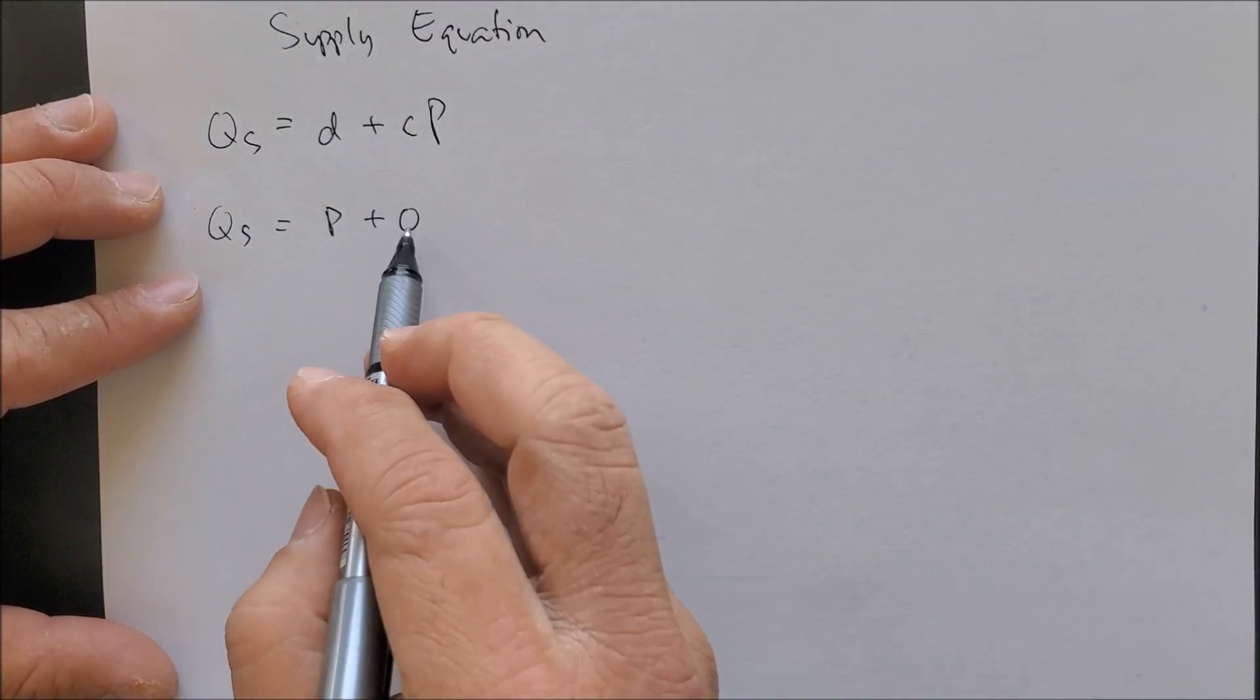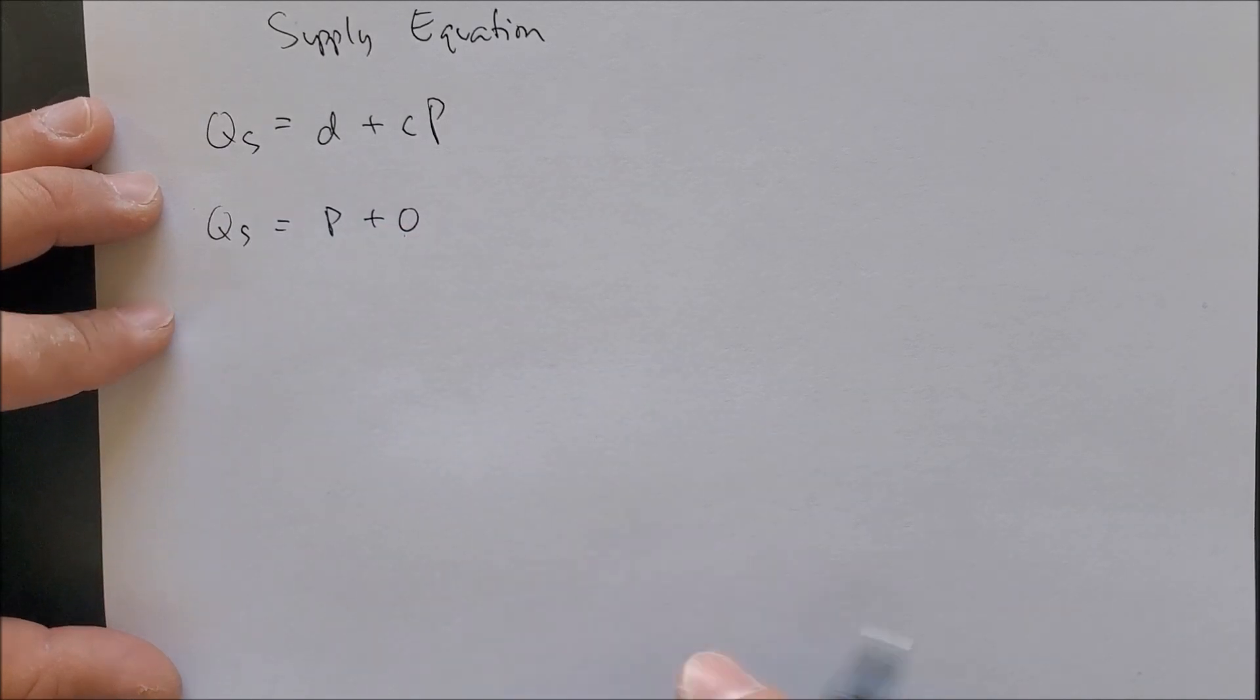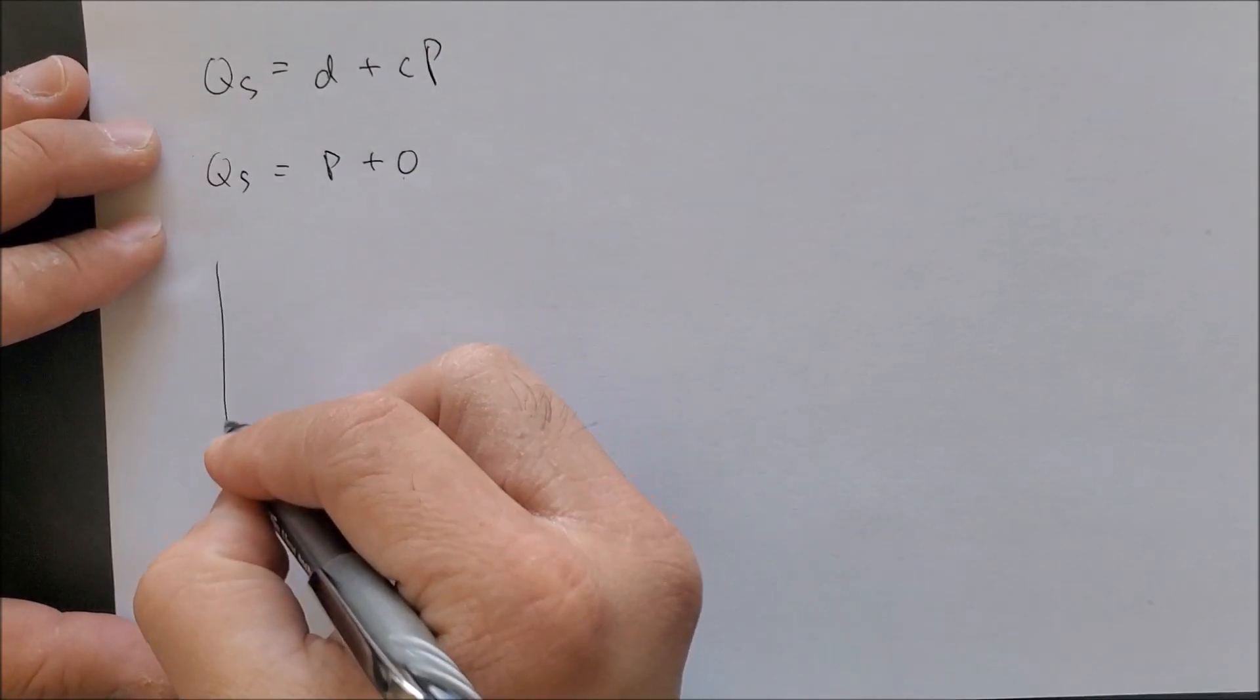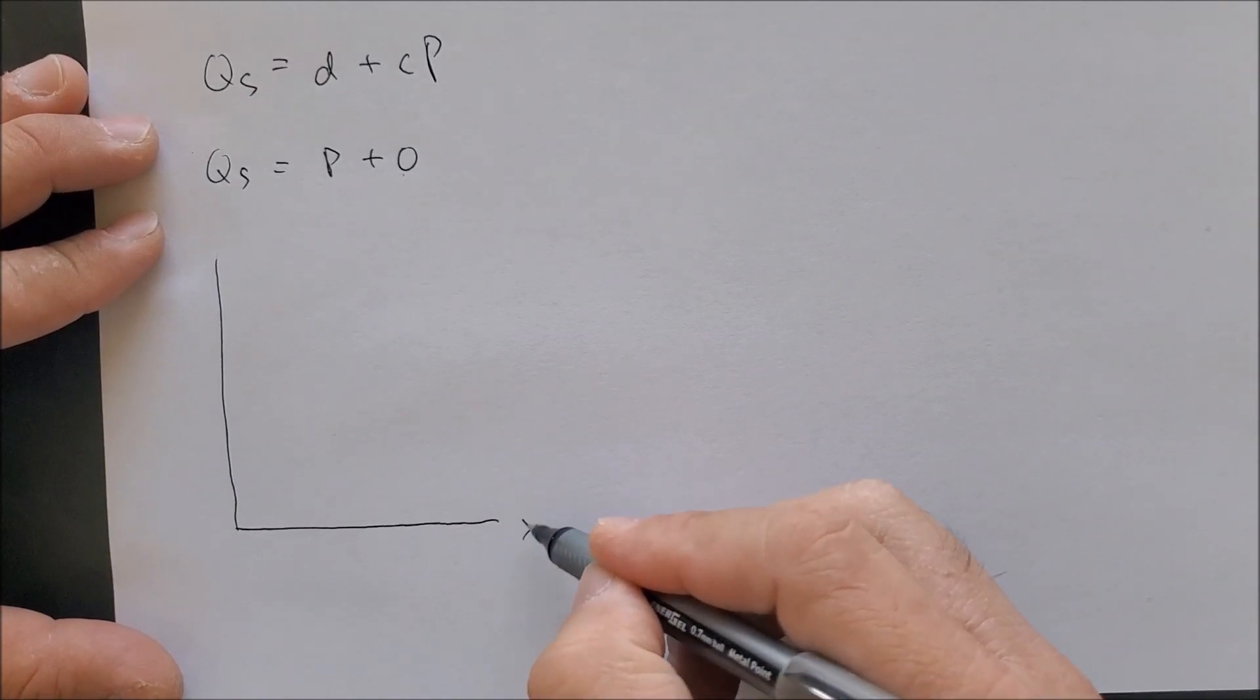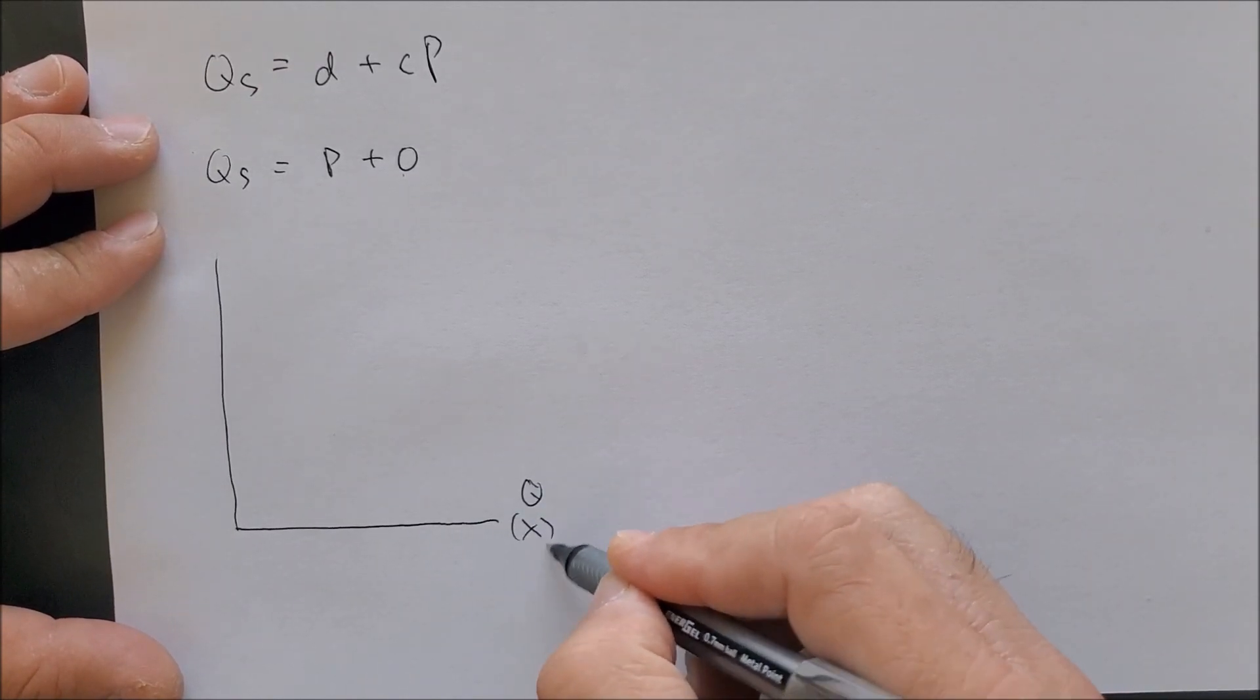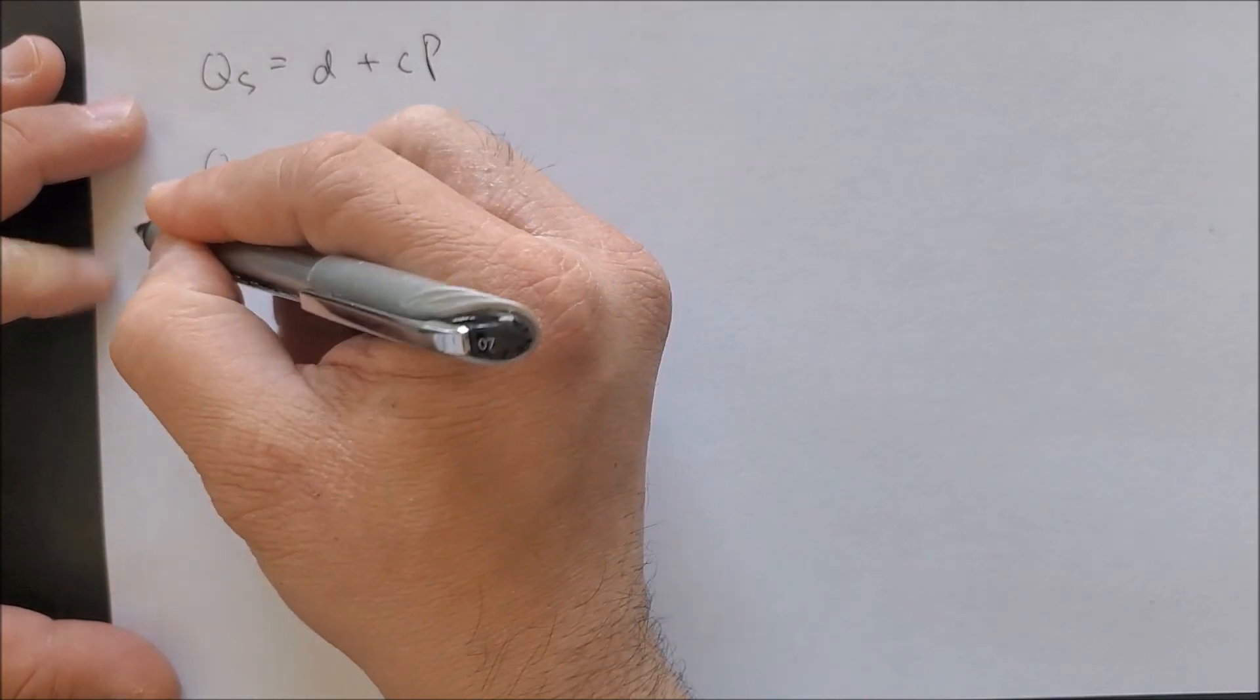To graph this on a graph, we have the x-axis which is the quantity, the y-axis which is the price, and our point of origin at zero.